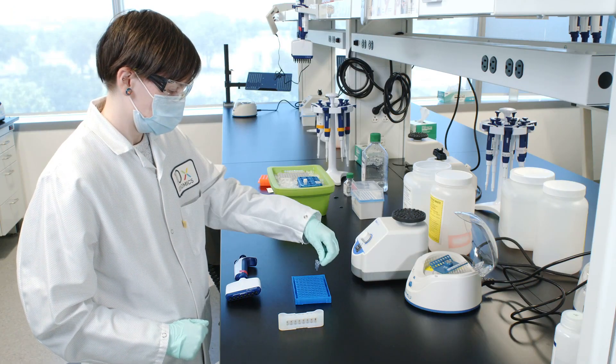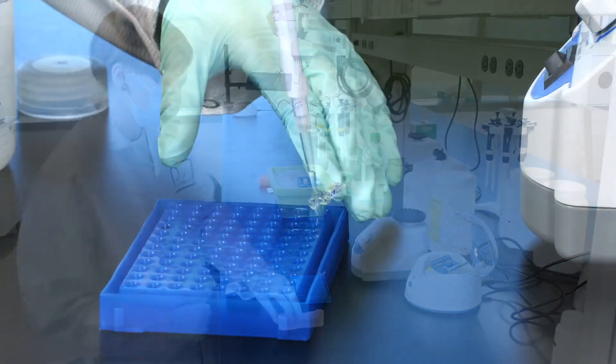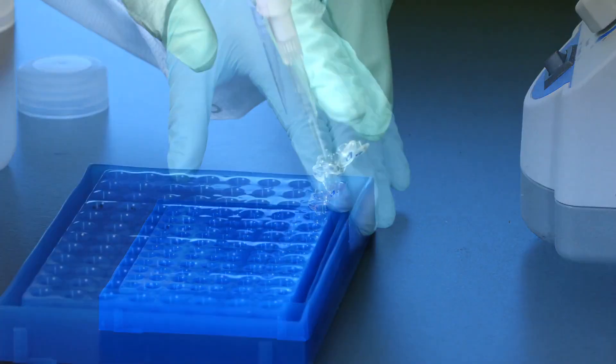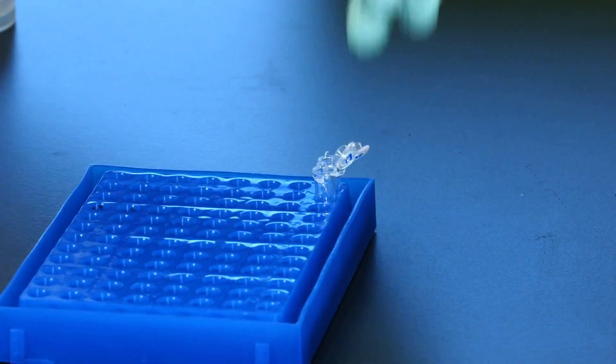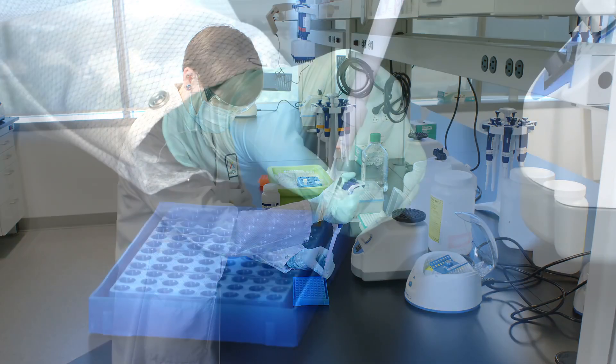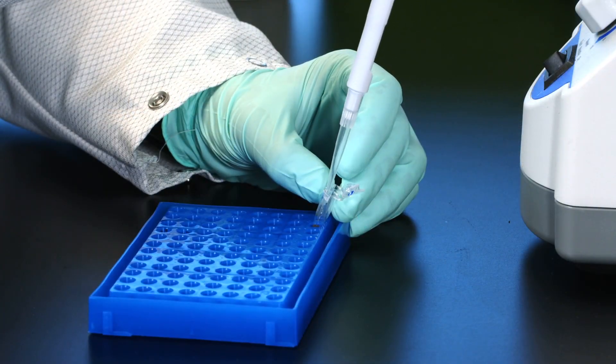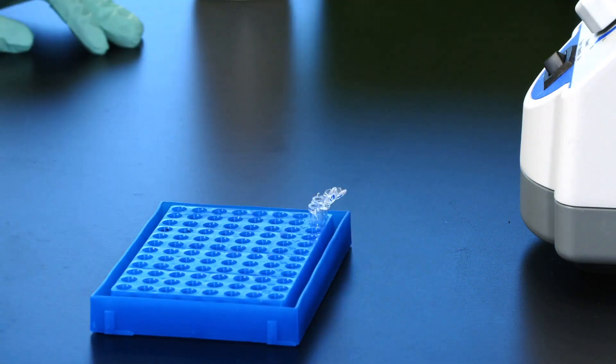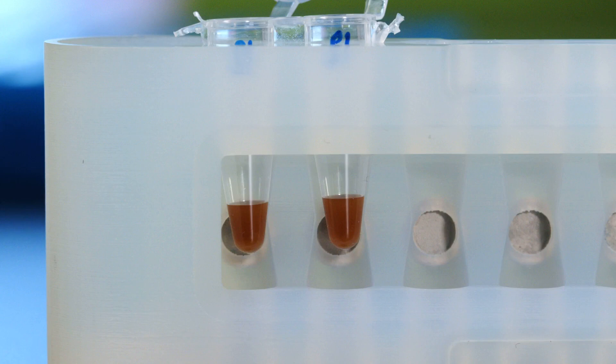Remove from the magnet. Add 27 microliters of buffer EB. Pipette mix 15 times. Incubate for 2 minutes at room temperature. Place on the magnet in the low position until the solution clears.